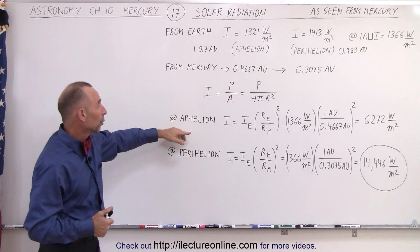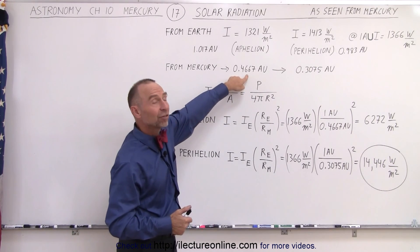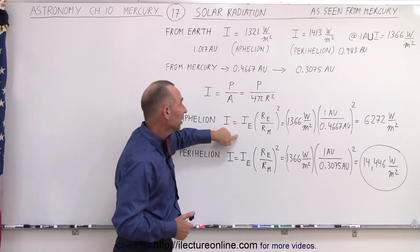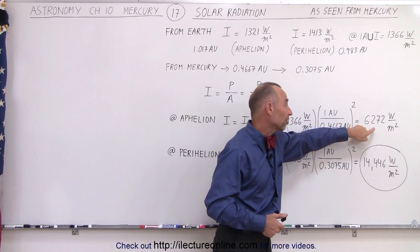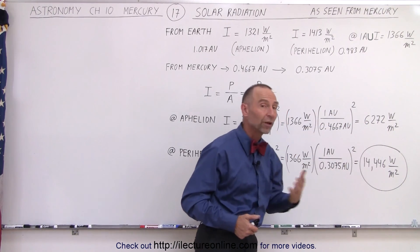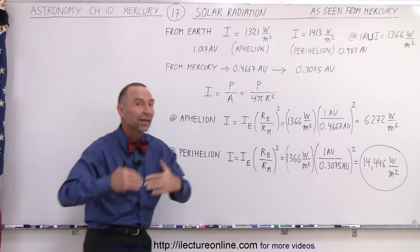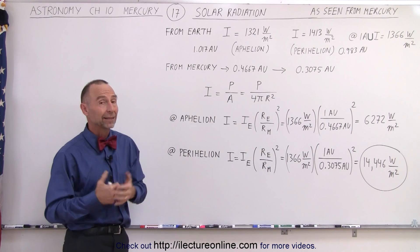So at aphelion when Mercury is less than half the distance between Earth and the sun, the intensity is more than four times as high, and so the heat deposited on the surface is 6272 watts per square meter with no atmosphere to hold any of it back like on Earth.